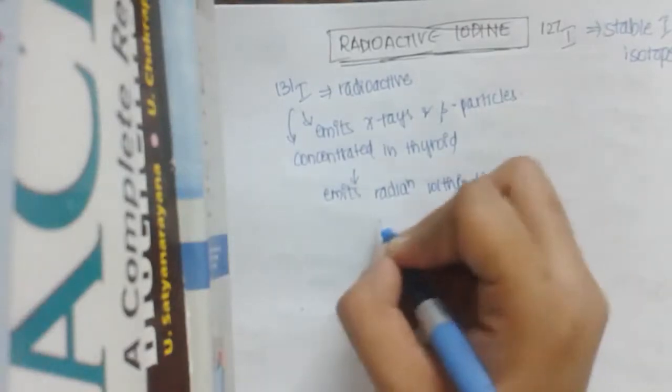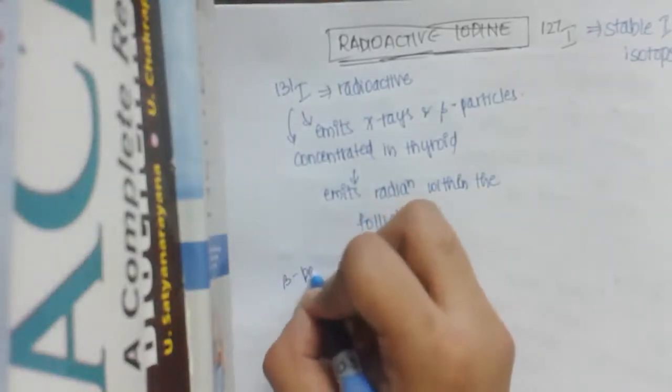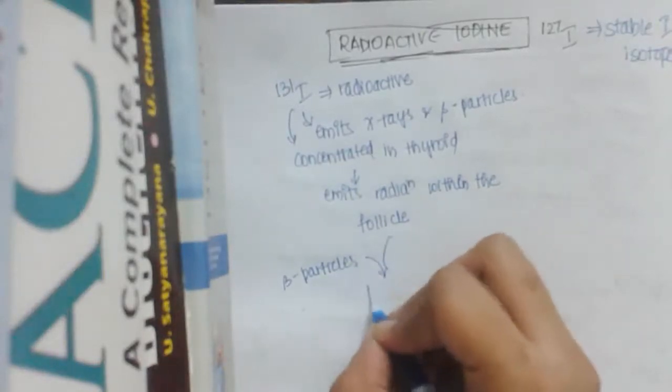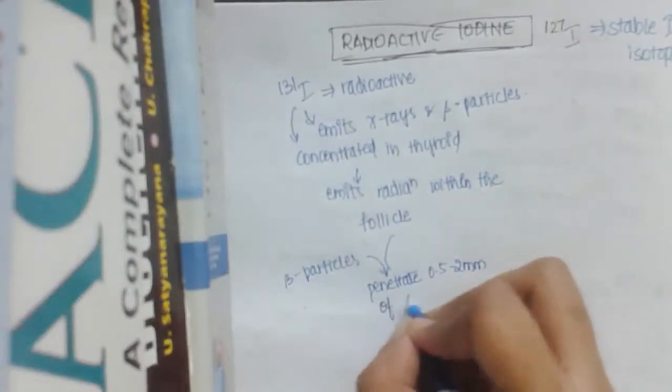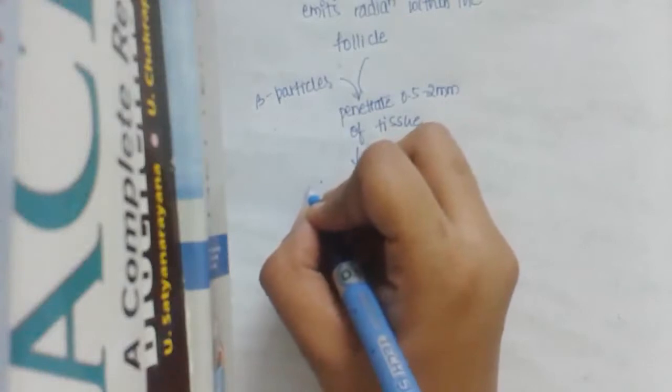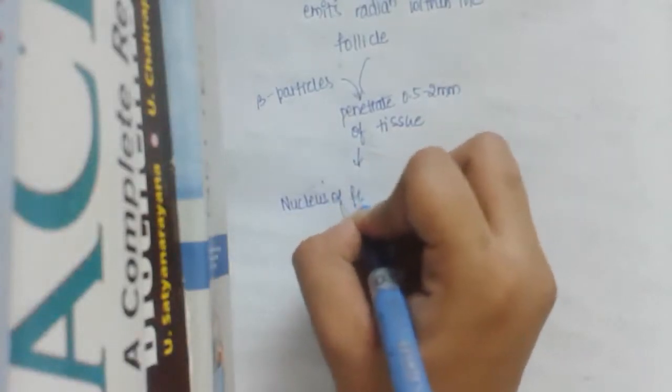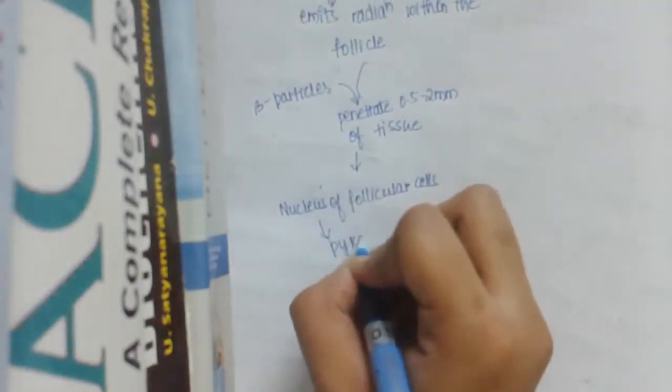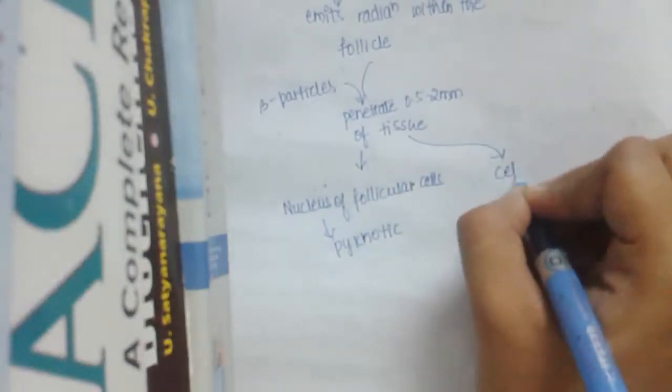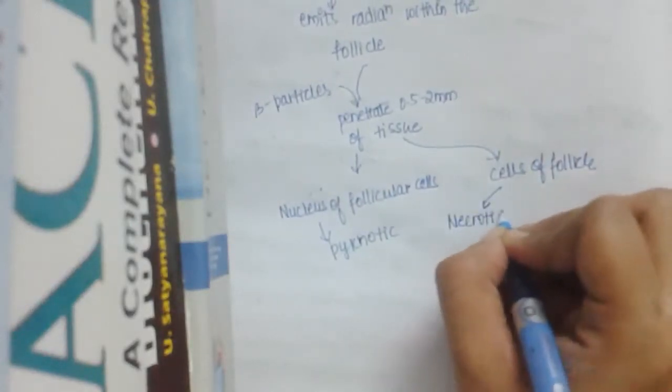Within the follicle, especially beta particles, they penetrate 0.5 to 2 millimeters of tissue. This leads to the nucleus of follicle becoming pyknotic and cells of follicle becoming pyknotic and necrotic.